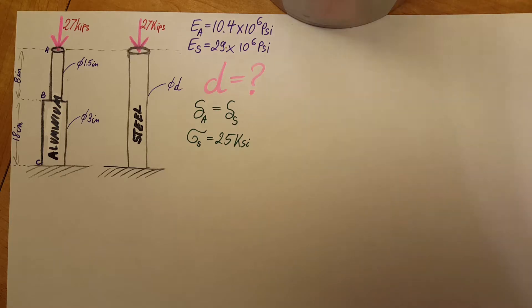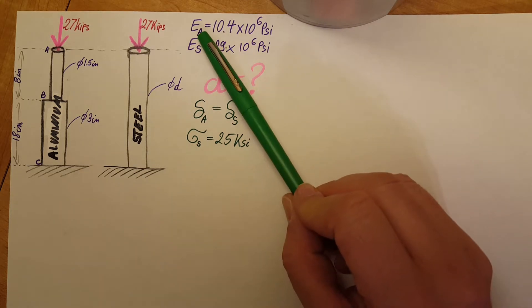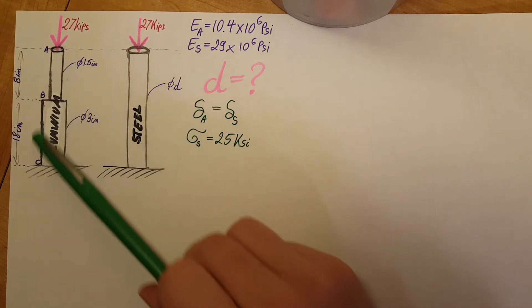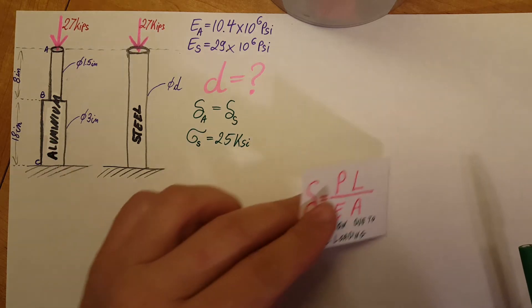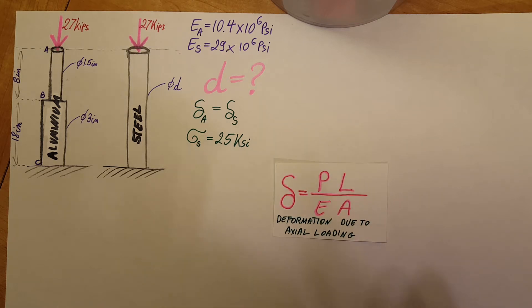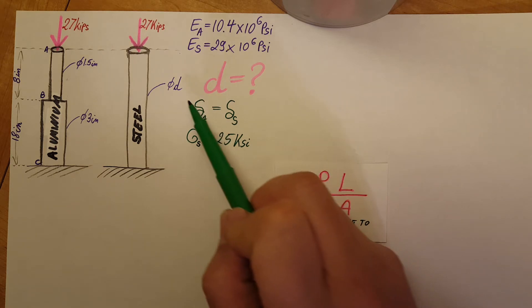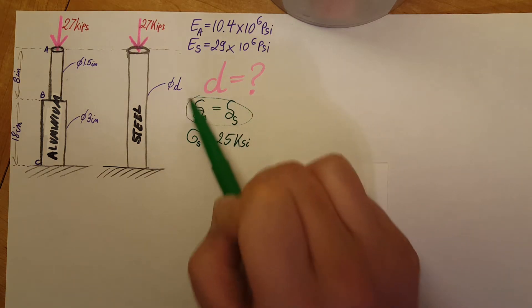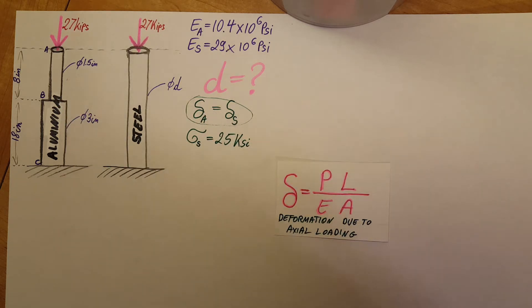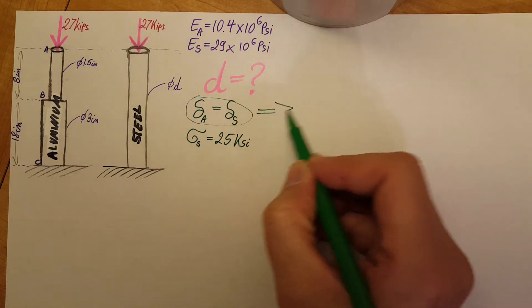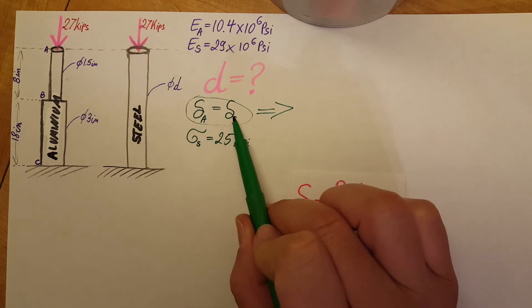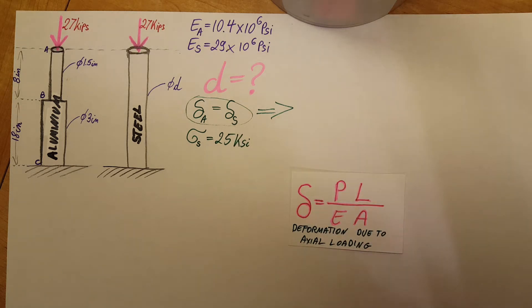We are given the modulus of elasticity E for aluminum and steel, and all the measurements for our aluminum rod. The formula we'll start with is the deformation due to axial loading. We begin with the condition that the deformation of the aluminum must equal the deformation of the steel.